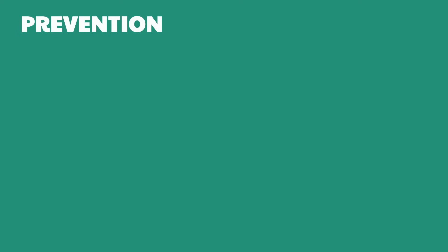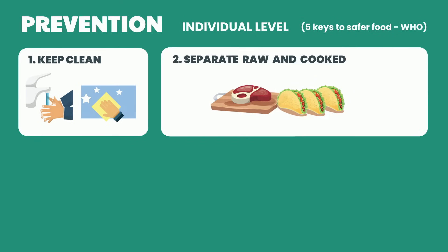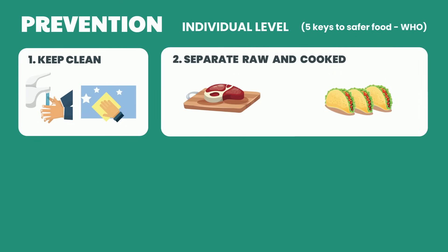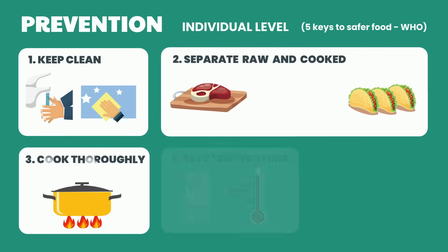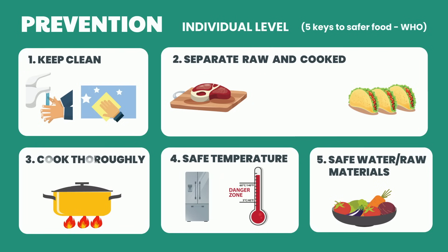At an individual level, at home or in food establishments, there are simple steps that can be taken to reduce the risk of foodborne disease. These include keeping hands and preparation areas clean, separating raw and cooked food, cooking thoroughly, keeping food at a safe temperature, and using safe water and raw materials.